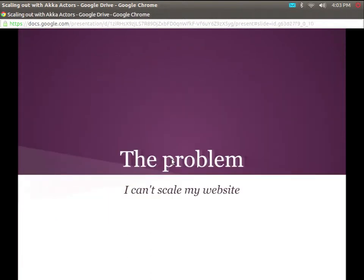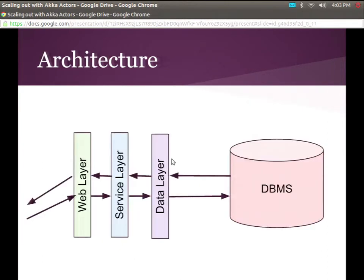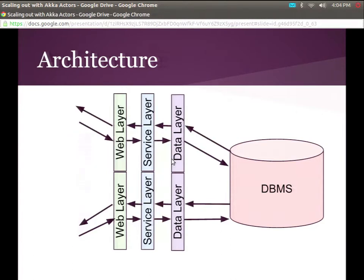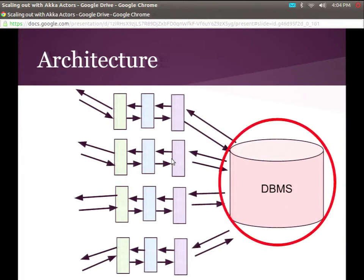The problem: I can't scale my website. I have a website, and it's doing stuff, and I have issues. This is taken from a Spring One talk where we were using the Spring Travel system and having issues scaling. We looked at our classic architecture — web, service, data, database — and scaled it out by doubling the web, service, and data layers, but we're still having problems. Anyone see what the issue is? We have one database.